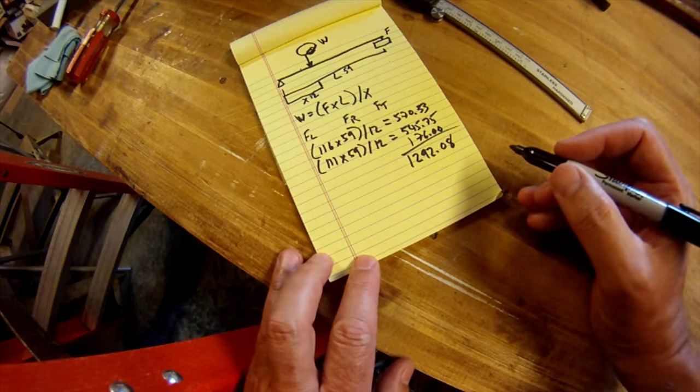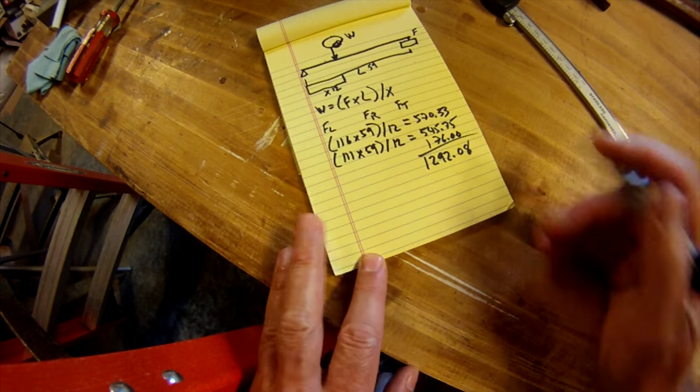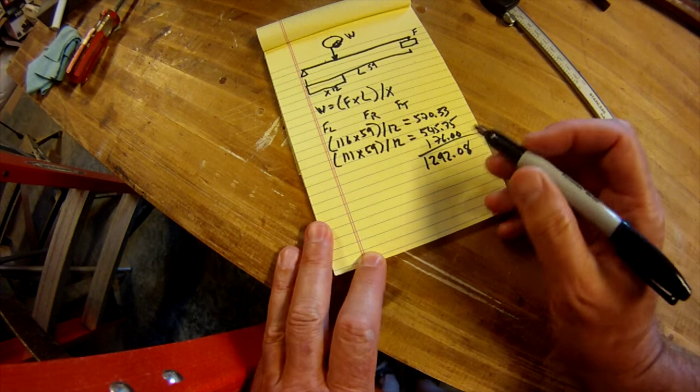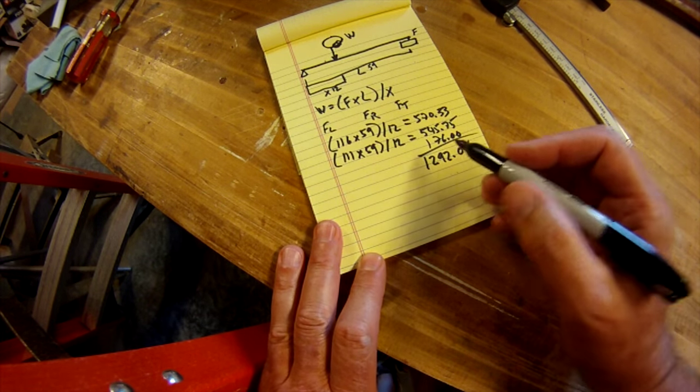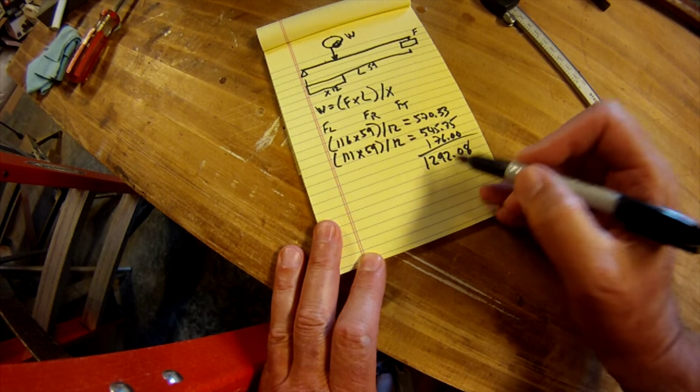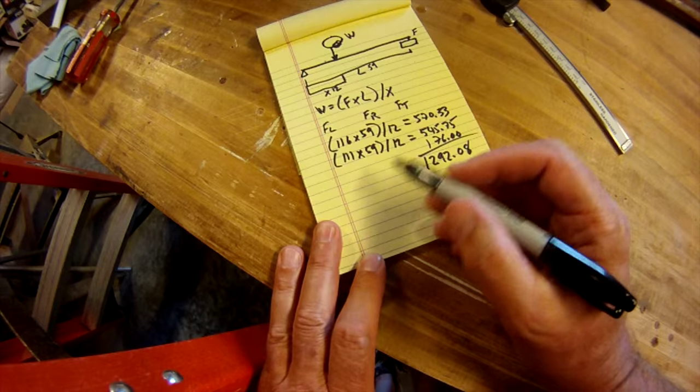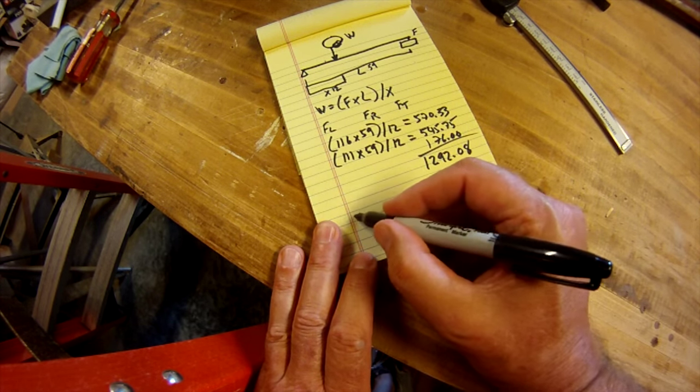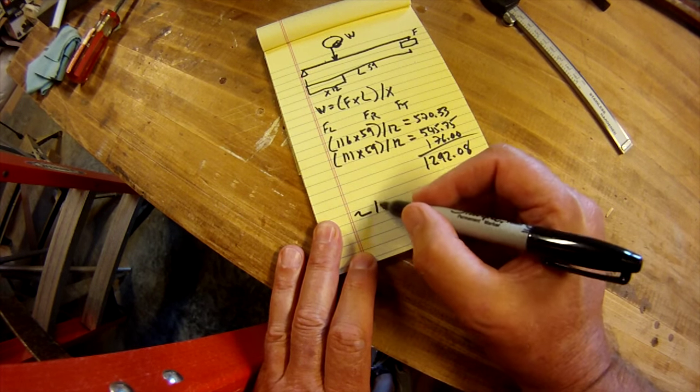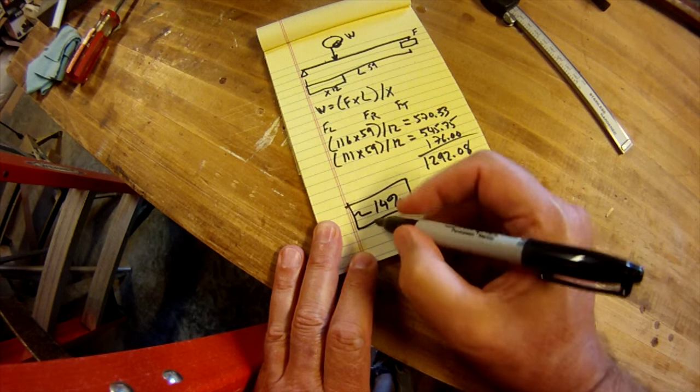Now the teardrop was about halfway loaded with camping gear. There's one other number that you need to know, and that's how your tongue weight relates to this total amount. The tongue should be somewhere between 9 and 15% of this number. I did the calculation beforehand, and I come out to about 14% for the tongue weight.